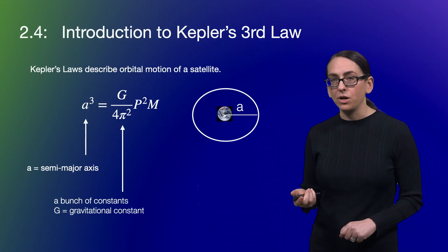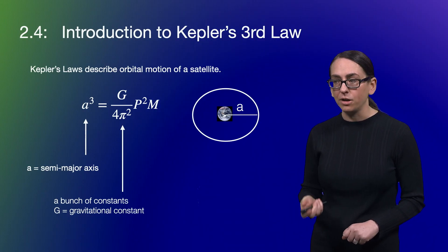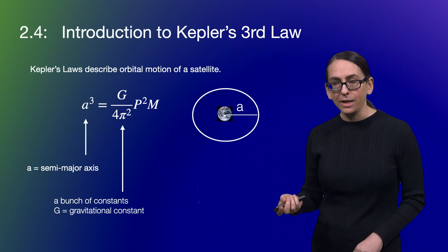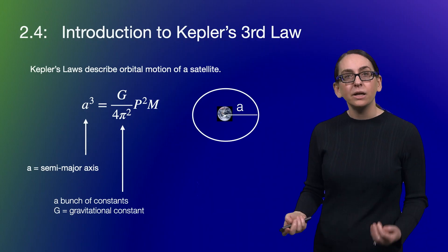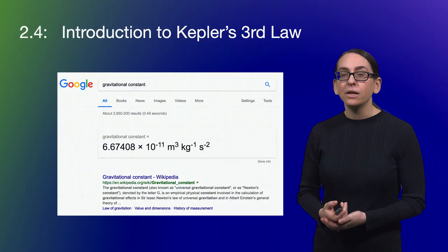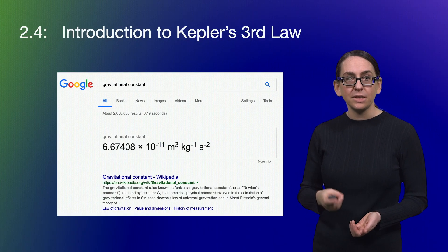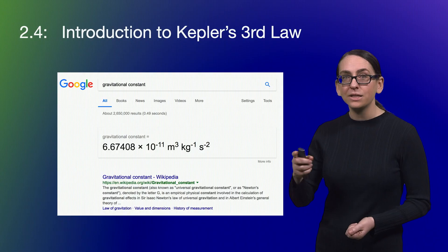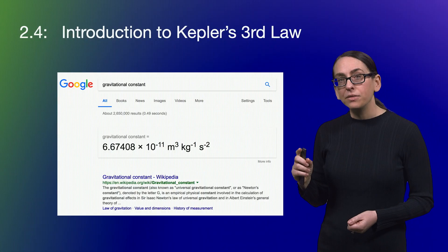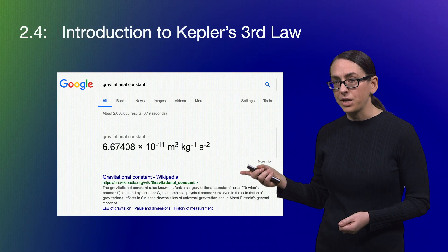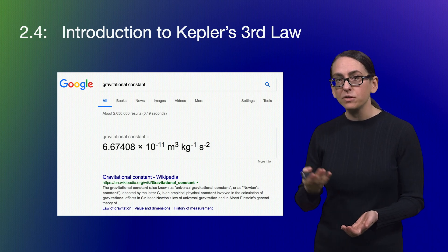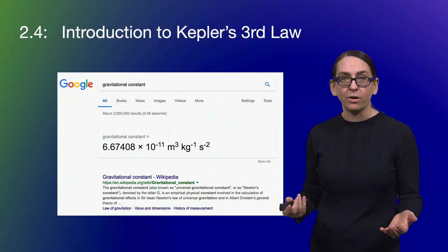This introduces a new term we haven't talked about before — the constants needed to get the numbers right. So G over 4π squared: 4 is a number, π is a number (3.14 something something), and G is also a number — the gravitational constant, which is 6.67 times 10 to the minus 11. That means a lot of zeros after a decimal point. This constant also has units after it: m is meters, kg is kilograms, and seconds. We'll need to make sure we're using the same units throughout our calculations.